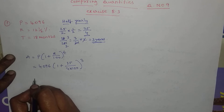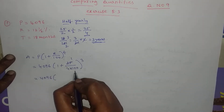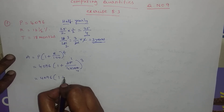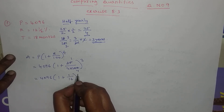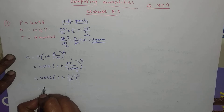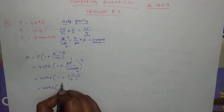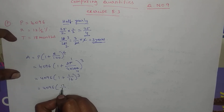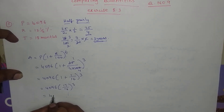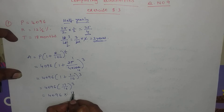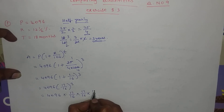So time n equals 3. The formula gives: A = 4096 × (1 + 1/4)³. Now 1 plus 1 by 4 equals 5 by 4, but using 17 by 16: 16 into 1 is 16, 16 plus 1 is 17. So A = 4096 × (17/16) × (17/16) × (17/16).